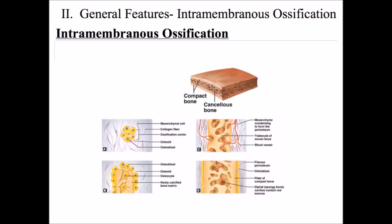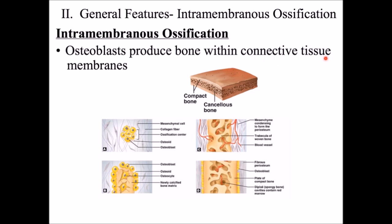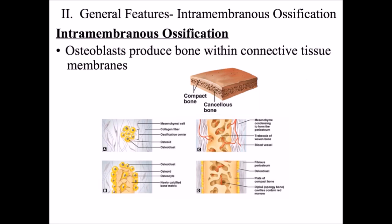Taking a closer look at intramembranous ossification: the important part is that it is the process of making bone between connective tissue membranes, and the result is the formation of flat bones. The way the process works is that you have connective tissue membranes on each side, and within the middle of these membranes, cells spontaneously become osteoblasts and make bone — then more bone, and more bone — until eventually you have a flat bone.